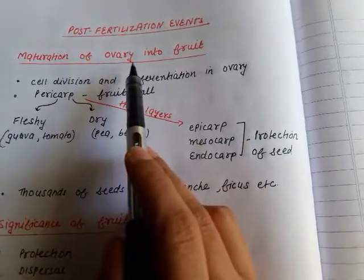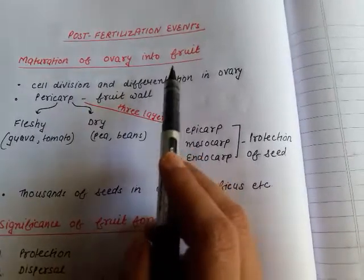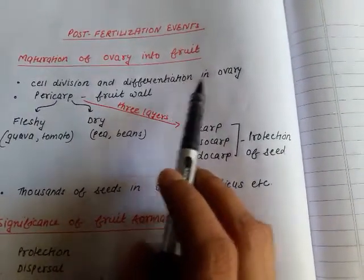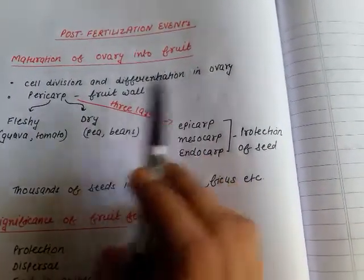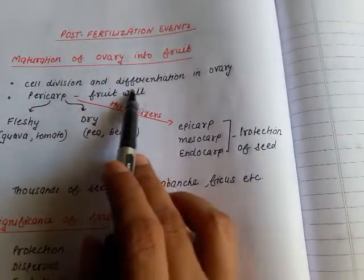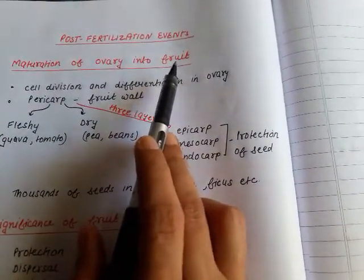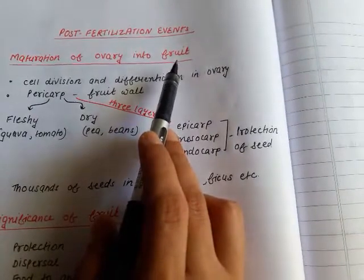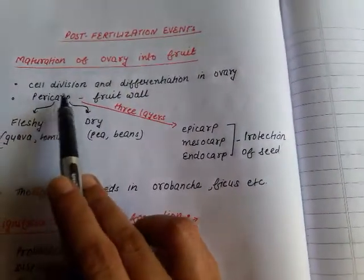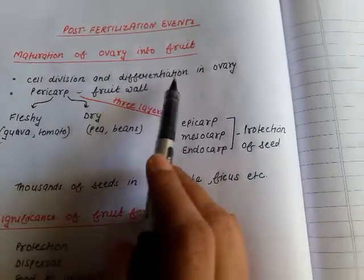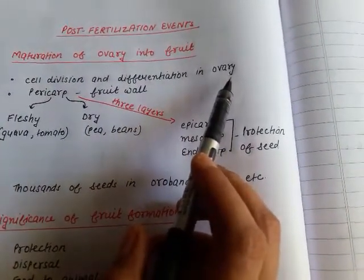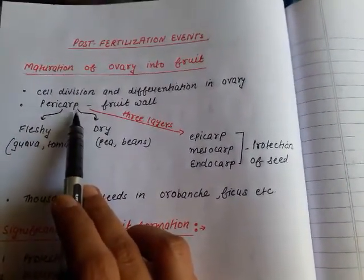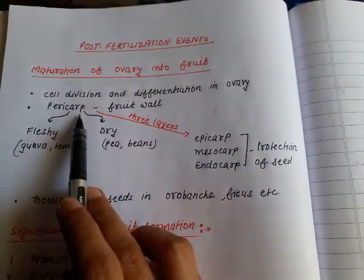Now, how does the ovary get mature into fruit? Various cell divisions and differentiation take place inside the ovary. As a result of cell division and differentiation, fruit formation takes place. In other words, fruit is formed as a result of cell division and differentiation inside the ovary.